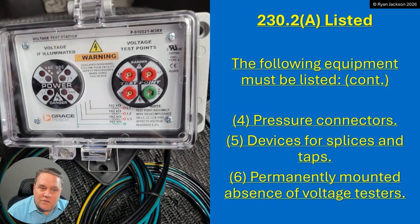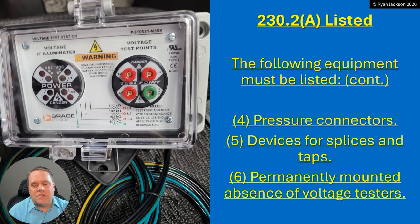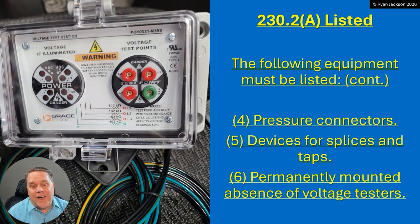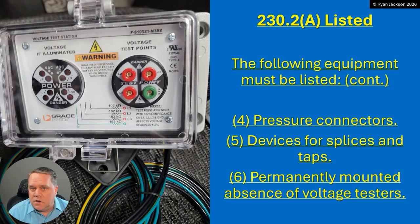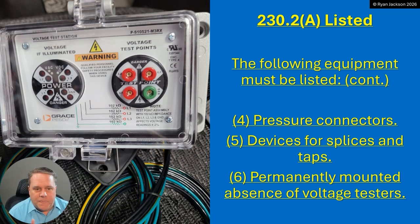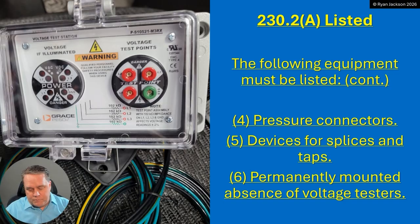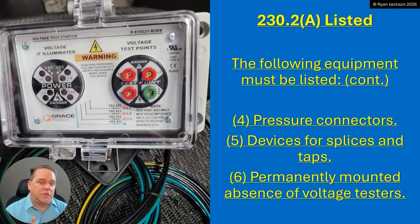New to this edition of the code, we recognize this thing in the picture, which is a permanently mounted absence of voltage tester. I think these things are really, really cool. It's not something you're going to buy at Lowe's or Home Depot — this is not something you're going to put on your house. This is something that's going to go on probably industrial or large commercial facilities, but they're super neat.